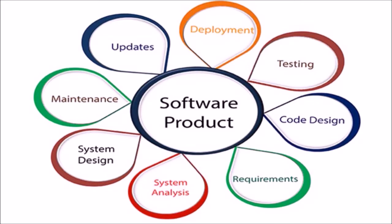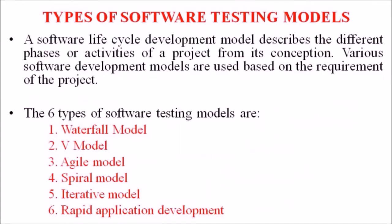No matter what the life cycle model is, every application undergoes the same phases as its life cycle. We shall now describe some of the most popular and widely used software development models, and they are: waterfall model, V model, agile model, spiral model, iterative model, and rapid application development RAD model. In this lecture we are just introducing these models; in the upcoming six lectures, we will detail each of these software development models.